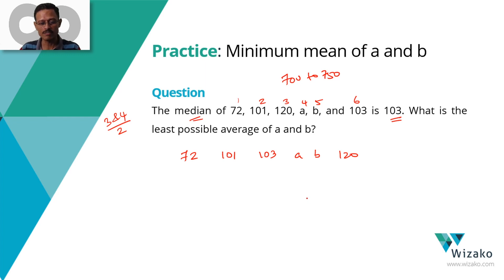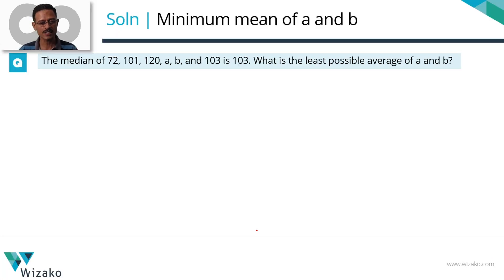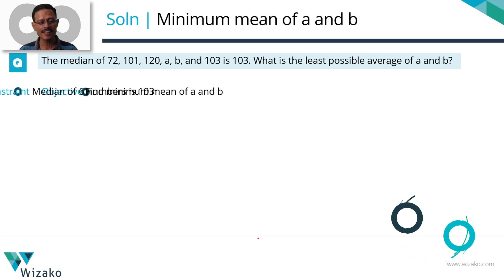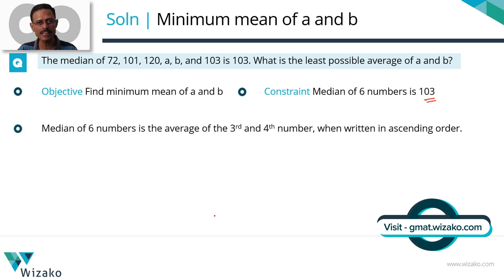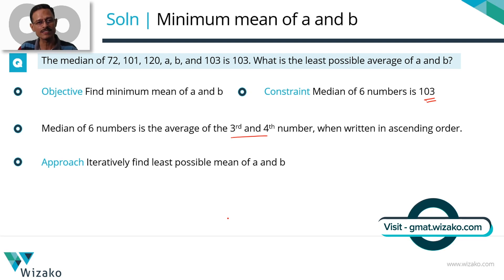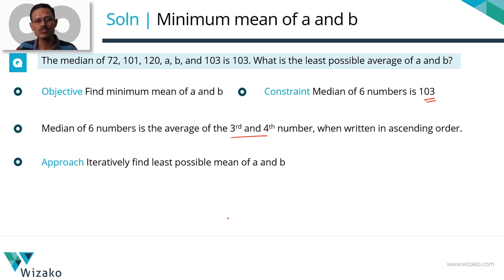Having settled that, let's move on. We need to find the least possible average of a and b — that is, the minimum value of (a + b) / 2. The objective is finding the least possible mean of a and b. The only constraint is that the median of these six numbers is 103. For six numbers, we write them in ascending order; the average of the third and fourth numbers gives the median. This is what makes the question really interesting — it's zero formula, just one key idea.